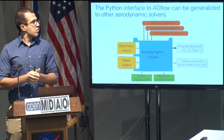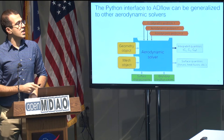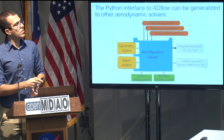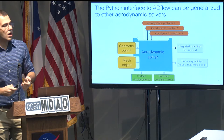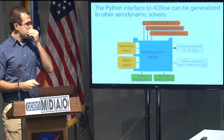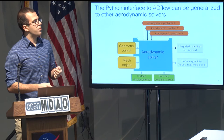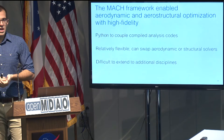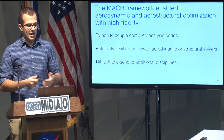All this work was done with the Python interface to ADflow, which is a general interface that can be applied to other aerodynamic solvers too. At the center of it all, we have the aerodynamic solver object created in Python. The mandatory inputs include an aerodynamic problem, and the solver always outputs integrated quantities. In an MDO framework, you can also plug in a geometry object for geometry manipulation and a mesh object to warp the volume mesh. You can couple this aerodynamic solver to other solvers by taking in surface displacements and boundary condition values, and outputting surface quantities like forces and heat fluxes. The whole MACH framework was the main enabler for high-fidelity aerodynamic and aerostructural optimization.